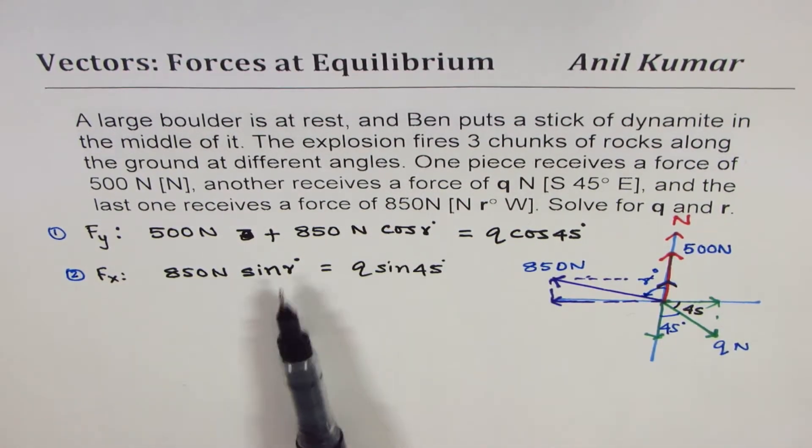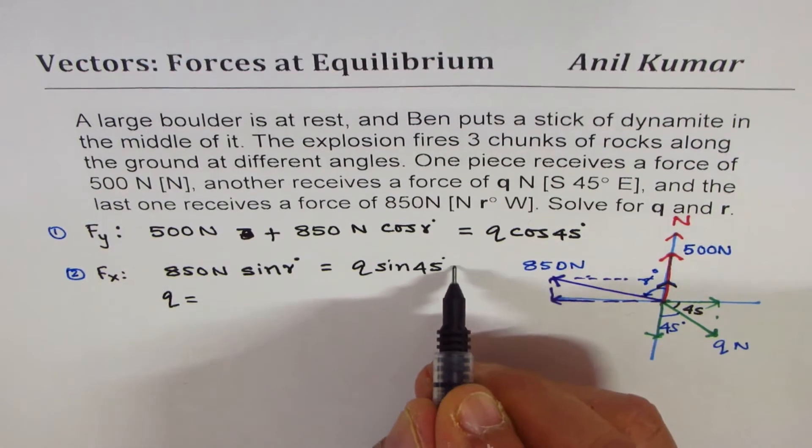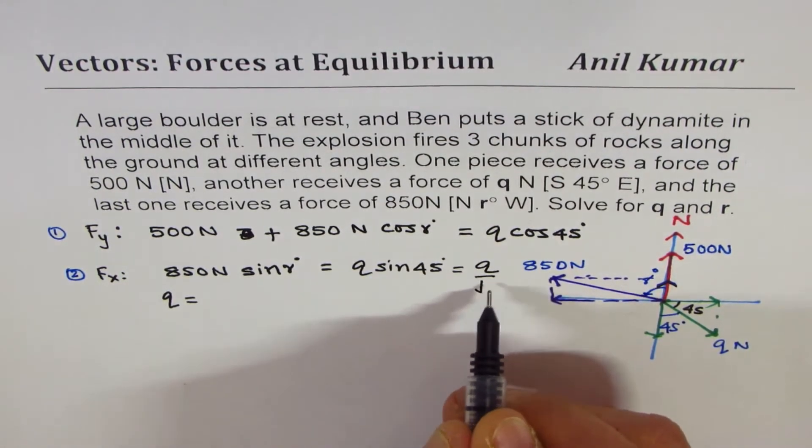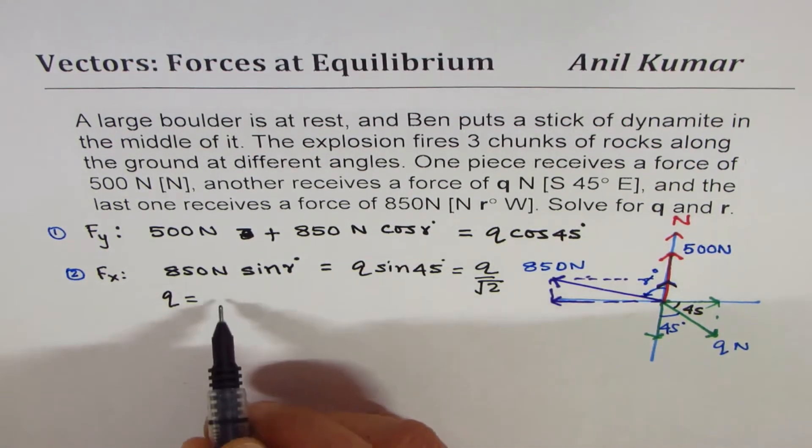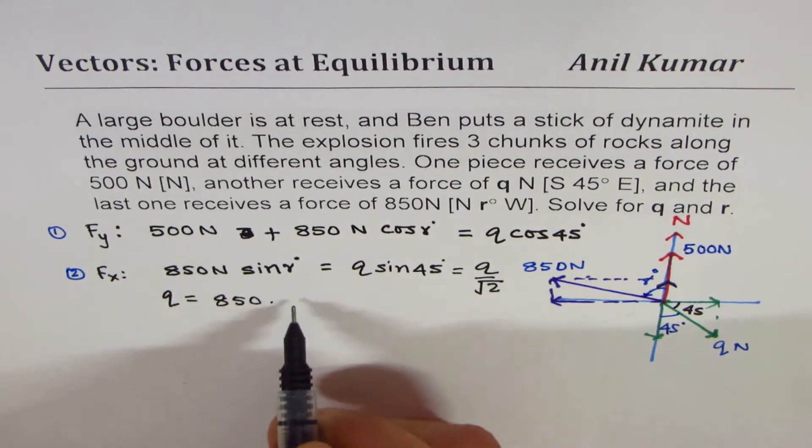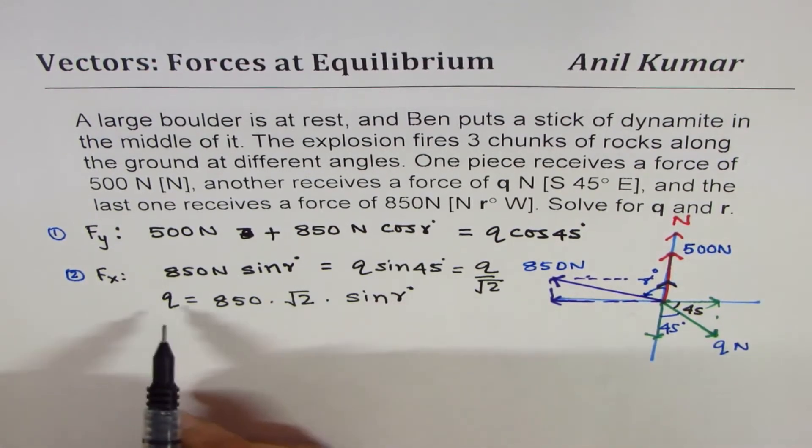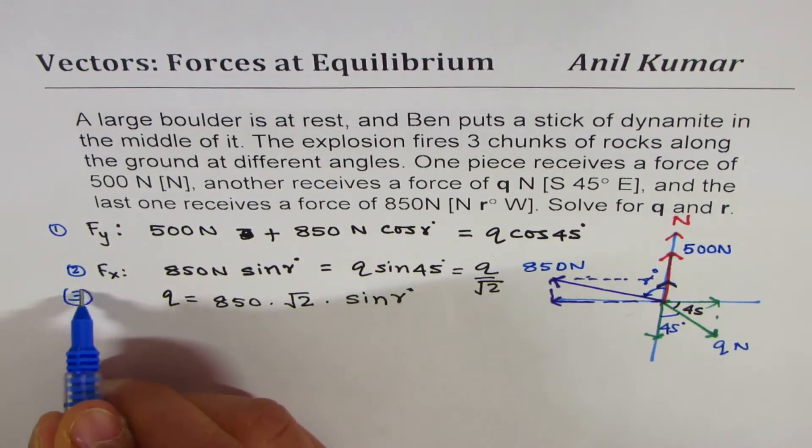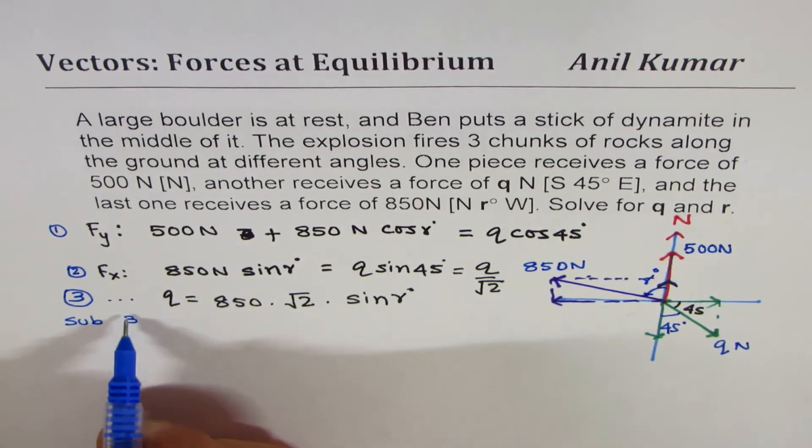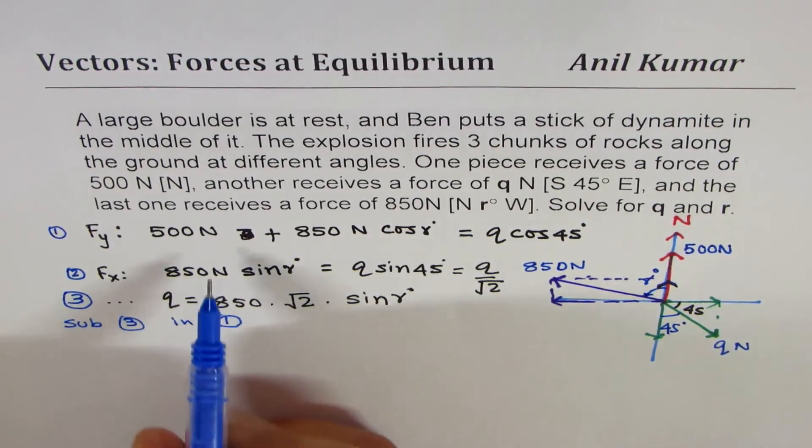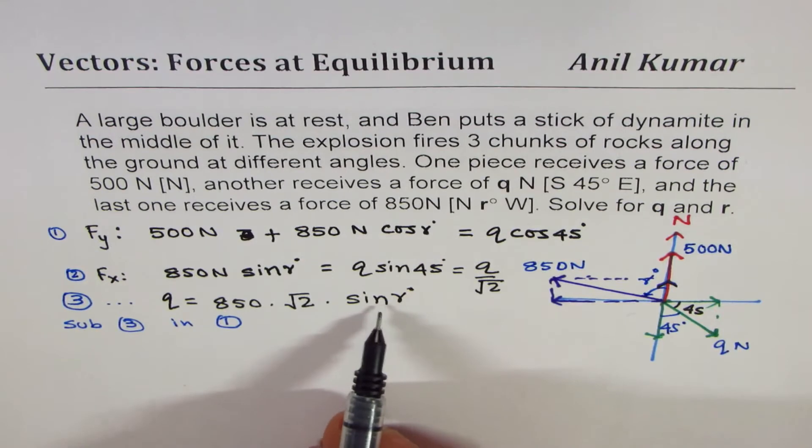So, let me solve this equation for q. So, we can write from here that q is equal to, this is sine 45, we can say q over square root 2. Sine 45 is 1 over square root 2. So, q is equal to 850 times square root 2 times sine of r degrees. So, we get q in terms of r. We can substitute 3 in 1 and then solve for r.